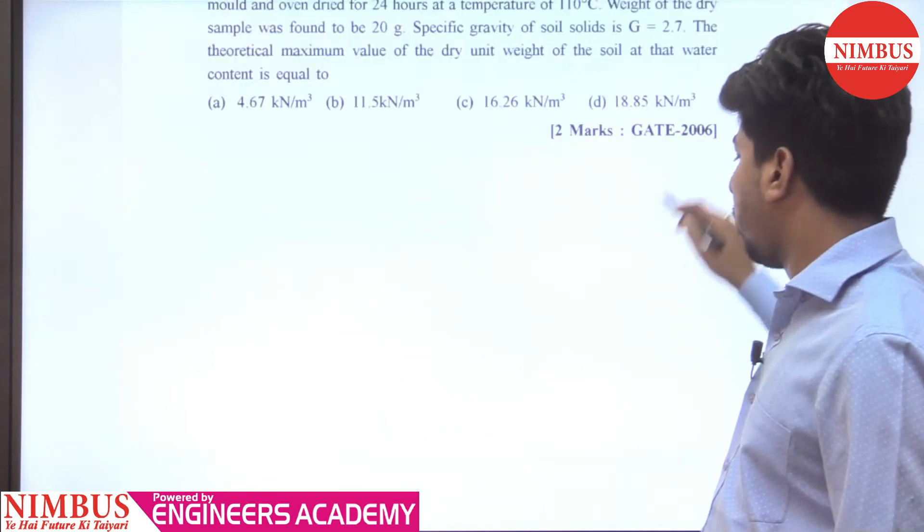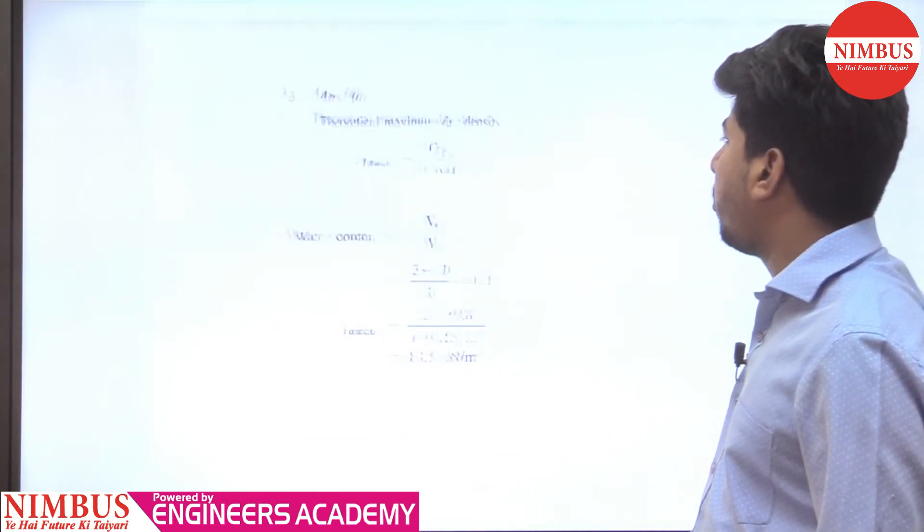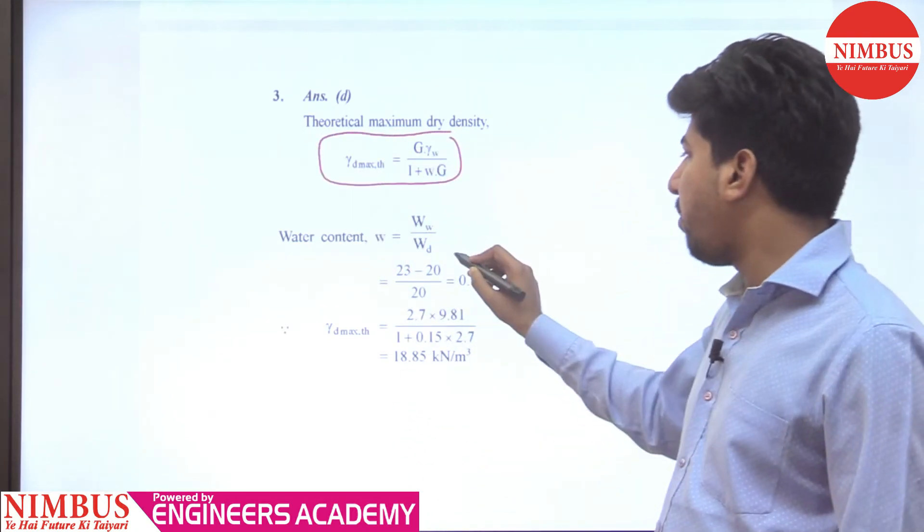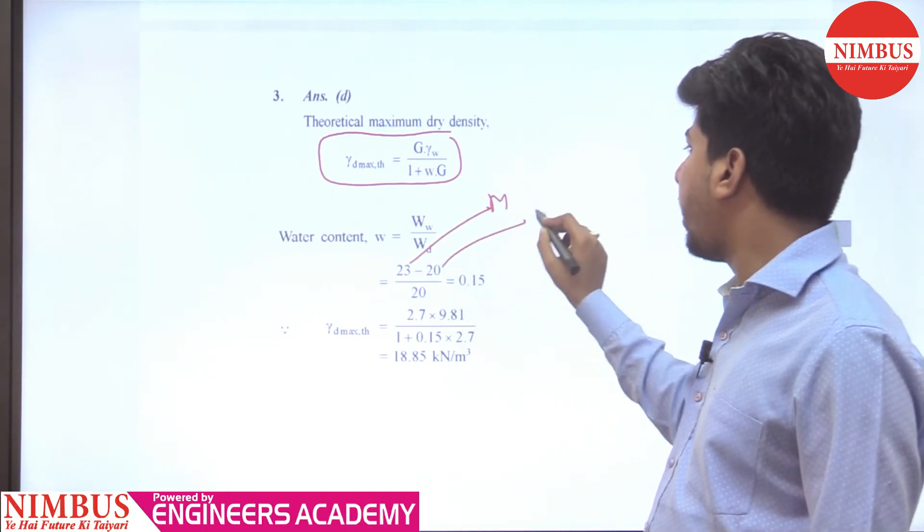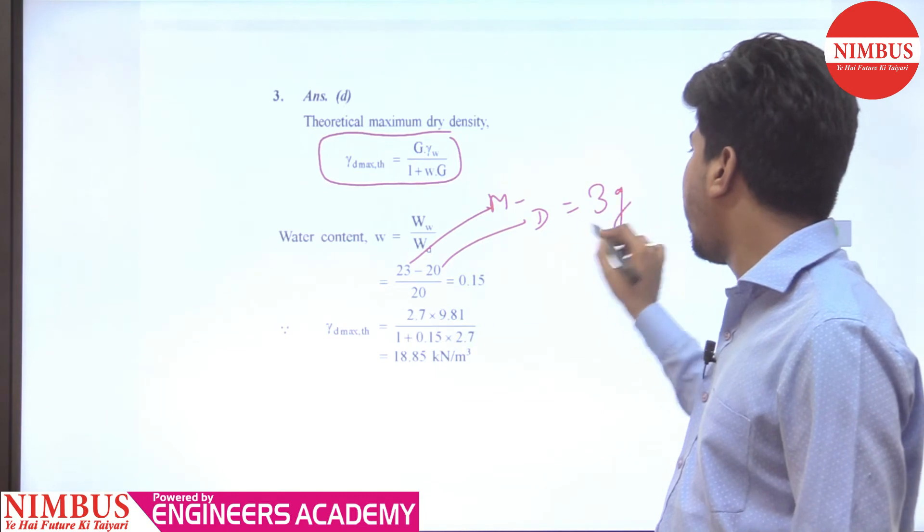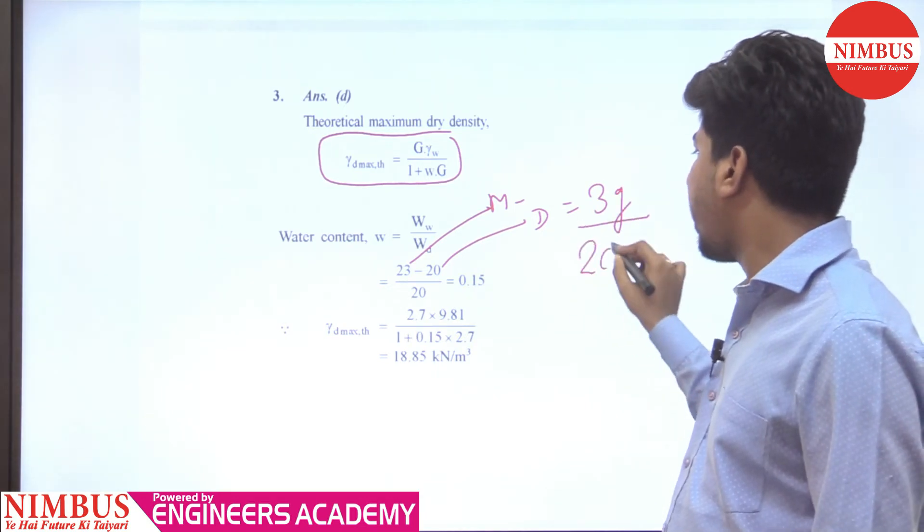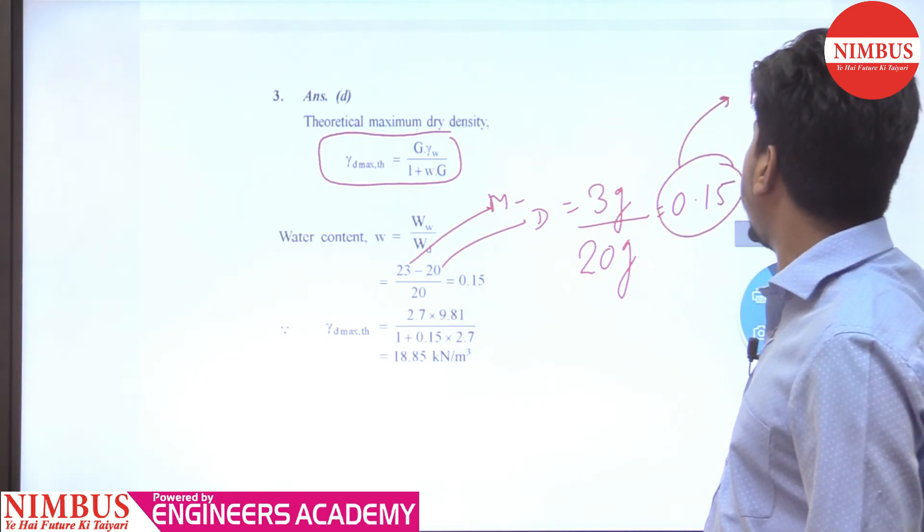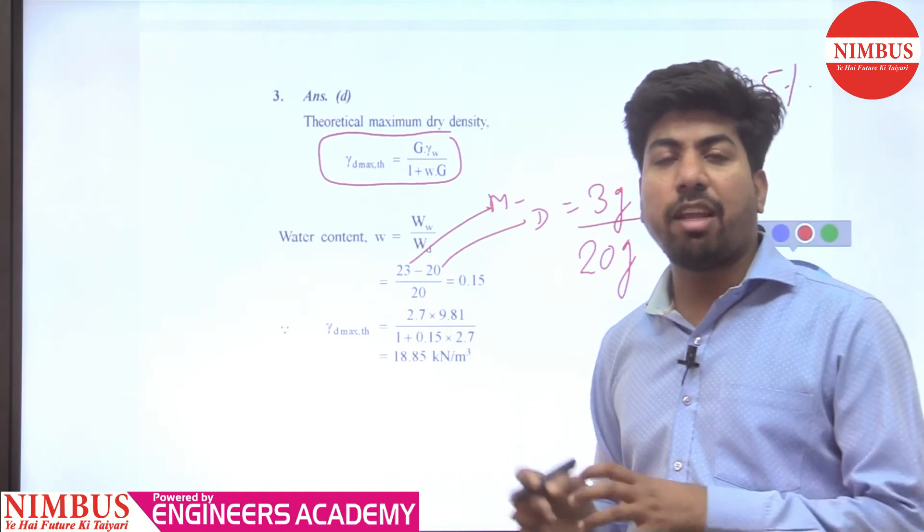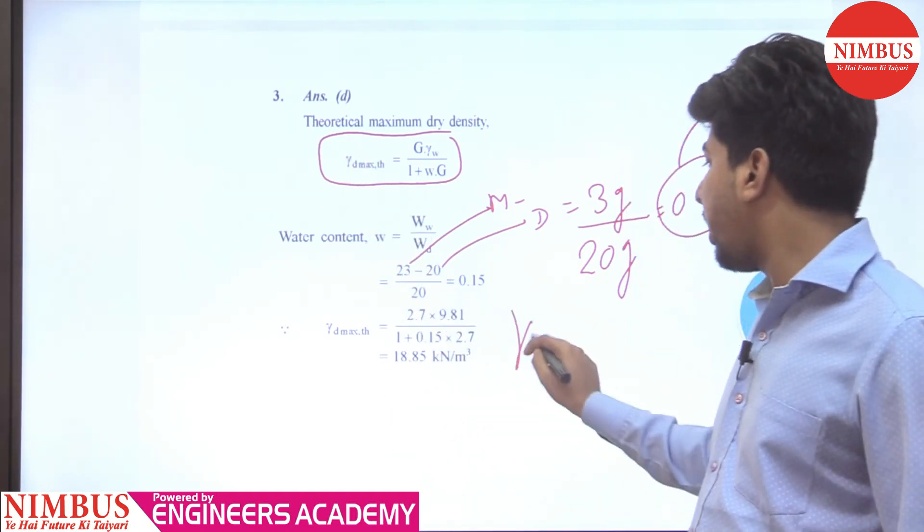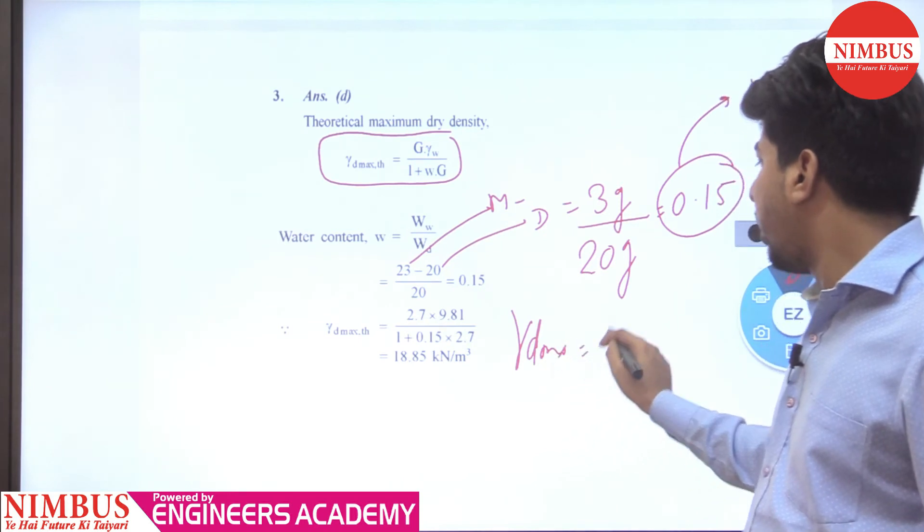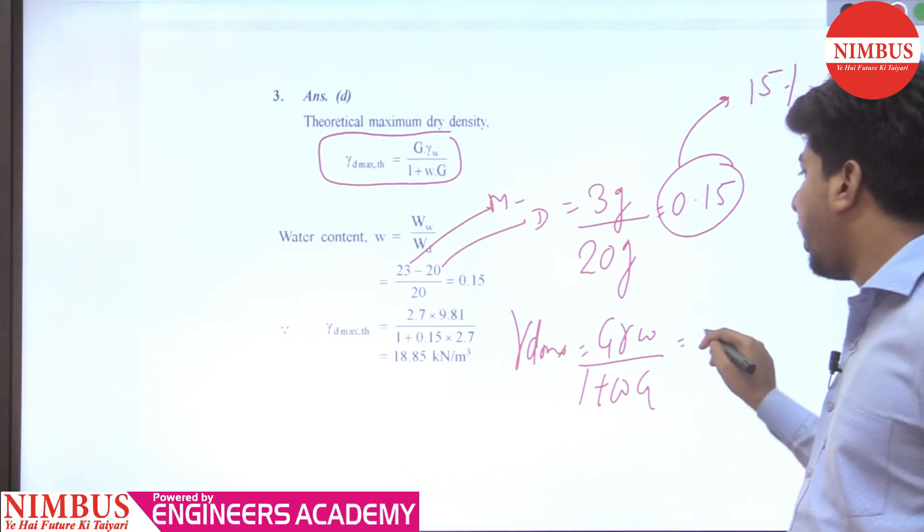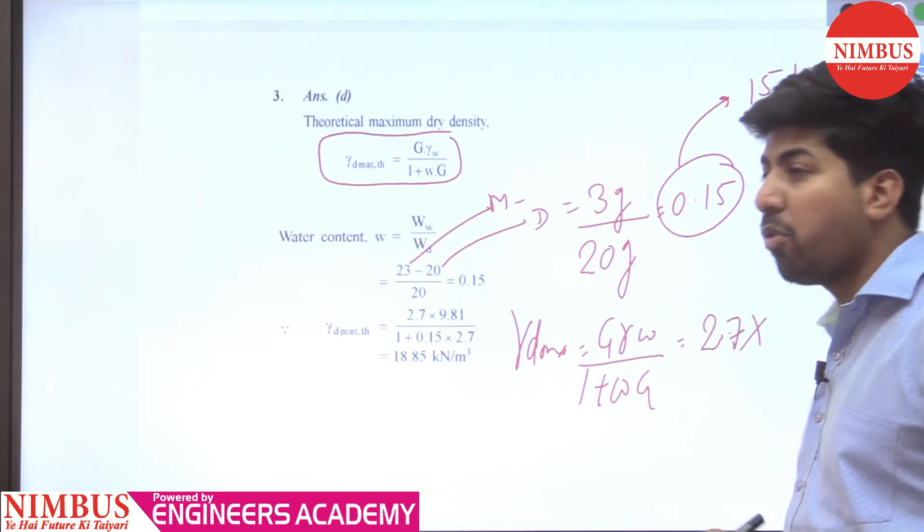The formula is G gamma w divided by 1 plus w G. So from here we will calculate water content. The formula we've used is G gamma w divided by 1 plus w G, where w is water content, weight of the water upon weight of the dry soil.